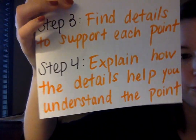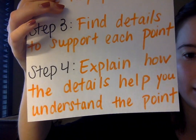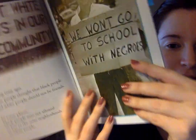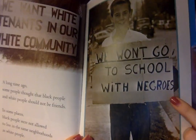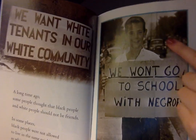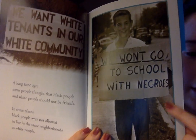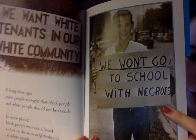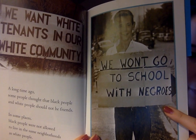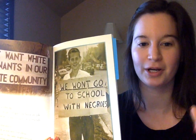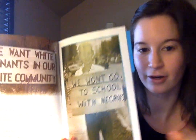Step four, explain how the details help you understand the point. The boy holding the sign — reading the sign and looking at the boy — helps me understand that white people supported segregation during this time period. So now that I've had my turn, we're going to practice together.